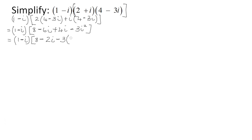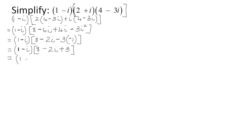Very important: the value of i² is negative one. Don't let the negative sign catch you out. So −2i and +3 gives us 8 + 3 = 11 inside the bracket, and −2i. We have now found the product of complex numbers two and three: 11 − 2i.